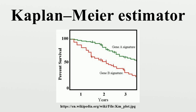Benefits of the Kaplan-Meier include an estimate of recovery rates, the probability of death, and the effectiveness of medications. It can also measure multiple variables to determine if there is a correlation between more than one of the events.